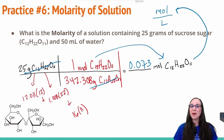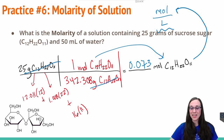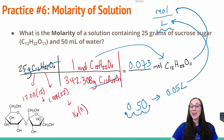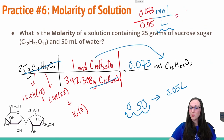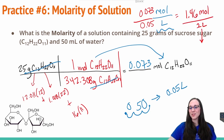I now have the numerator for my molarity ratio. I need the denominator: I have 50 milliliters, but that doesn't match units of liters. There are 1000 milliliters in a liter, so I move the decimal back three places — 50 milliliters becomes 0.05 liters. Dividing 0.073 moles by 0.05 liters, I get a molarity of 1.46 moles per one liter of sugar water — or another way to write that is 1.46 M sucrose solution.